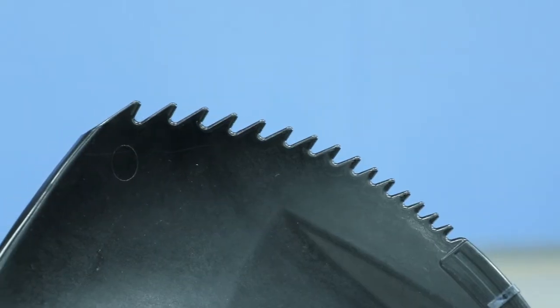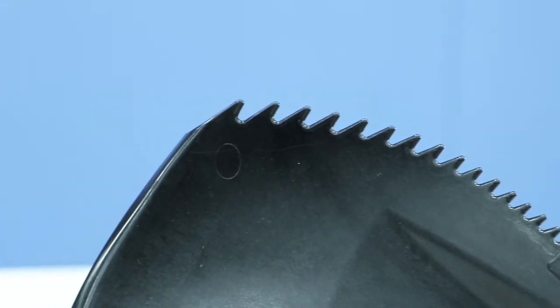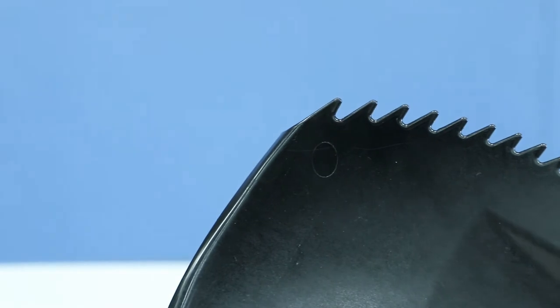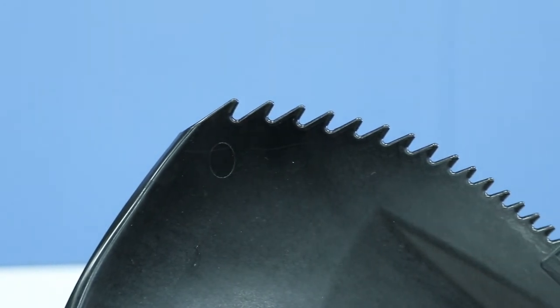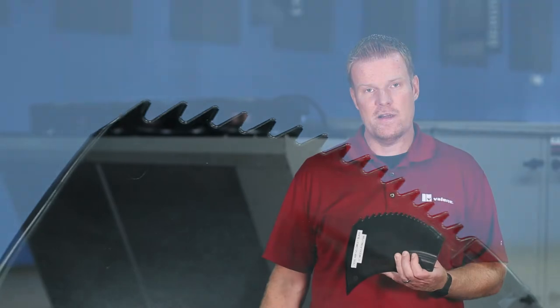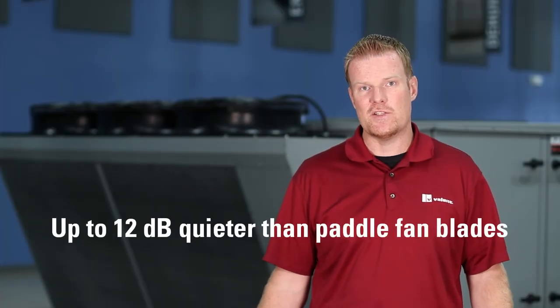At both InnoVent and Valant, we can offer this serrated blade condenser fan. These serrations along the blade edge greatly reduce the noise generated from the fan, and that reduction is anywhere in the neighborhood from 8 to 12 decibels.